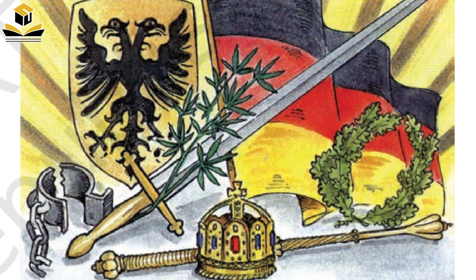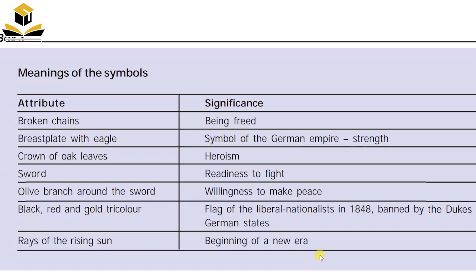The black, red, and golden tricolor was the flag of liberal nationalists in 1848, which was banned by the Dukes of the German states. The rays of the rising sun represent the beginning of a new era.